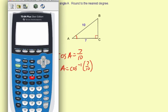So second cosine, and then 7 divided by 10. 45.57, which rounds up to 46 degrees.